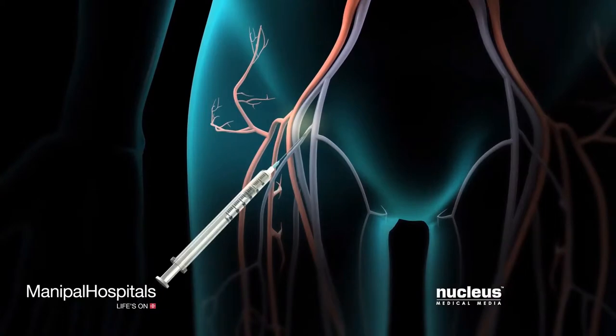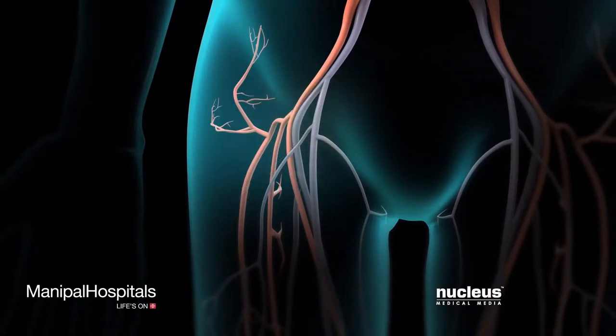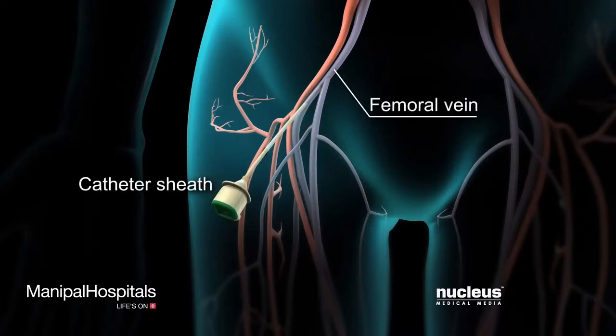After numbing a small area in the groin with a needle, the doctor will insert a short hollow tube, called a catheter sheath, into the femoral vein.